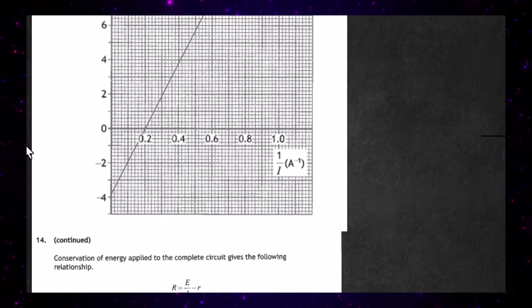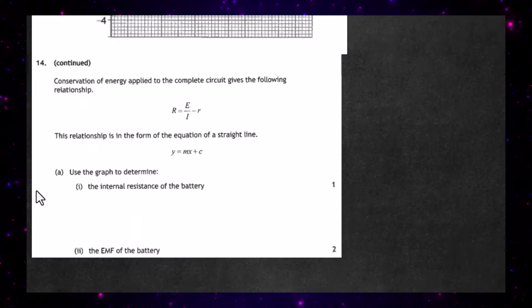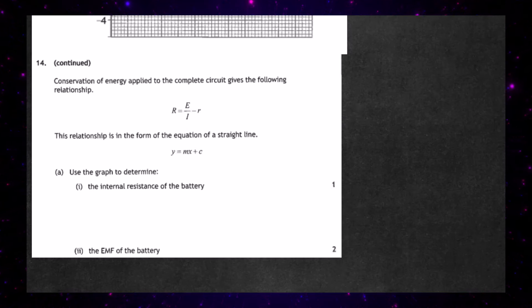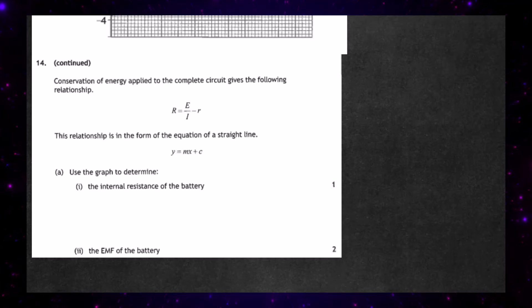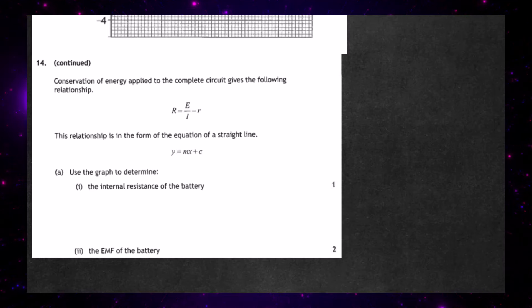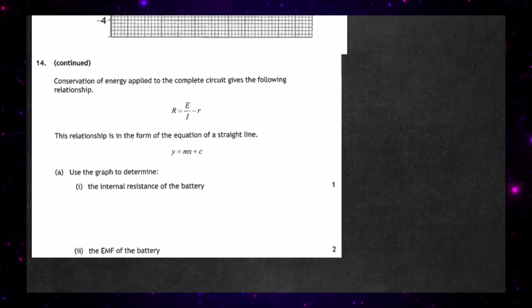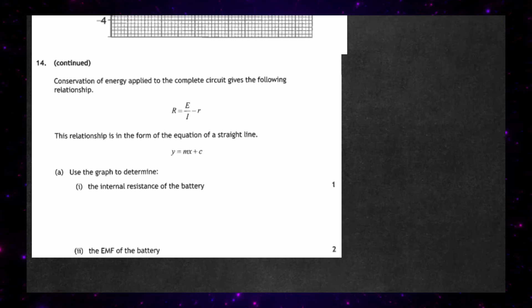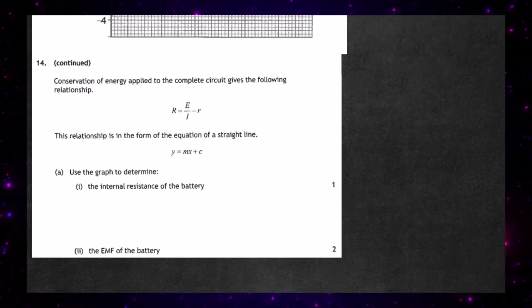What's the question asking us? It says conservation of energy applied to the complete circuit gives the following relationship: capital R, the external resistance, is equal to E divided by I minus r. This relationship is in the form of the equation of a straight line, y equals mx plus c. For one mark, use the graph to determine the internal resistance of the battery, and for two marks, determine the EMF of the battery using the graph.